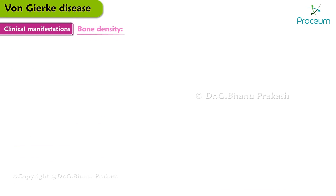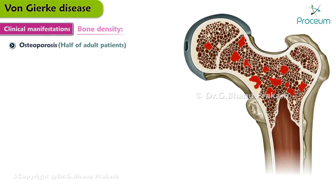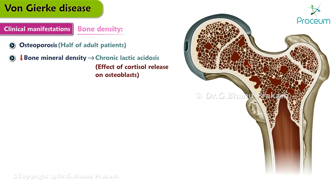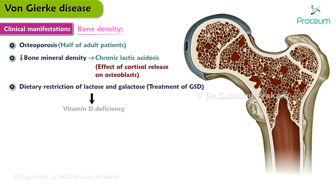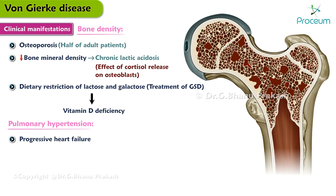Bone density manifestations are also present. Osteoporosis is seen in over half of adult patients with GSD-1A and 1B. Decreased bone mineral density may be due to chronic lactic acidosis, the effect of cortisol release in response to hypoglycemia on osteoblasts, and treatment of GSD itself, which involves dietary restriction of lactose and galactose that leads to vitamin D deficiency. A small number of patients also develop pulmonary hypertension, which can lead to progressive heart failure.